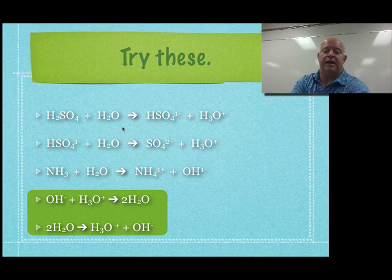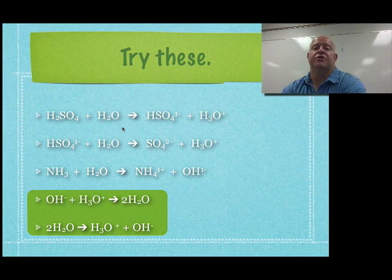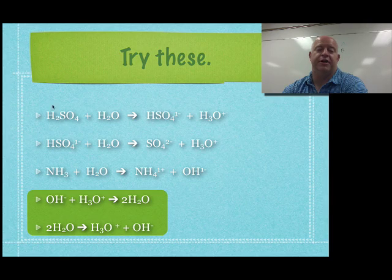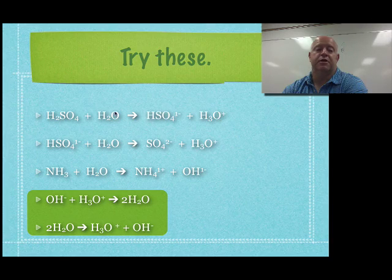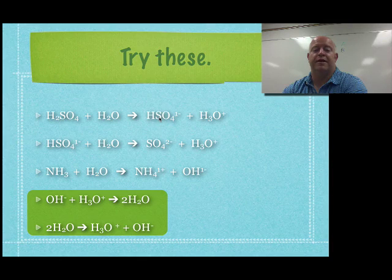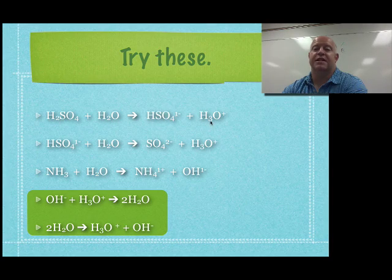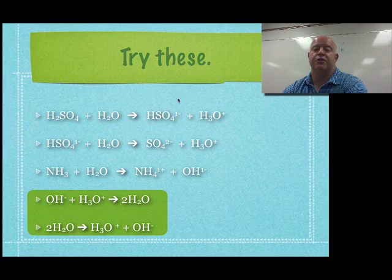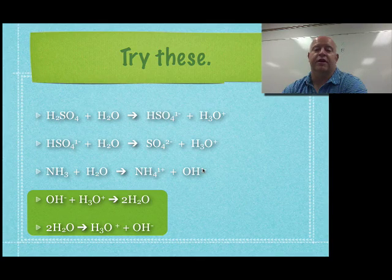Let's try a couple of practice examples. Pause the video and try to identify the acid and its conjugate. For example: H2SO4 and water react to give HSO4 1- and H3O+. The H2SO4 is donating a proton to become HSO4-, so it's the acid. Water is H2O becoming H3O+, so it's accepting a proton — it's the base. Now identify which is the conjugate acid and conjugate base, and repeat for all examples.